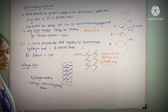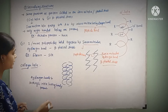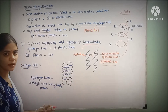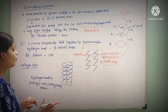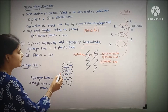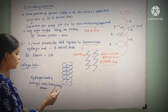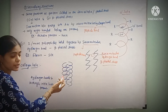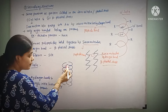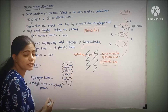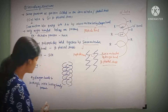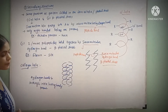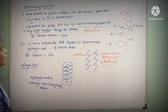Collagen helix also comes under secondary structure. Here, three polypeptide chains are folded, and between them hydrogen bonds and interlocking bonds are present.